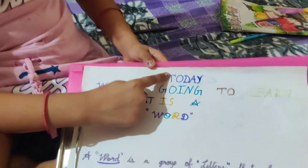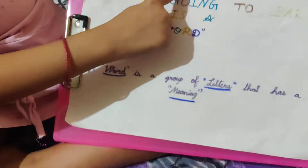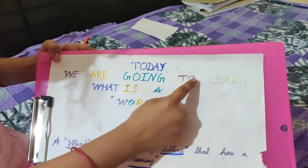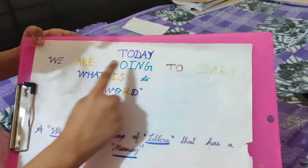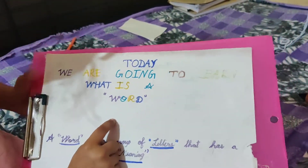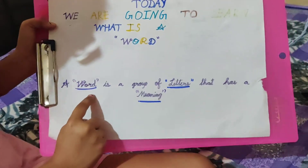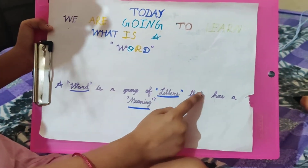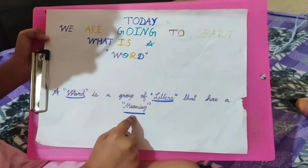Hello friends, my name is Aishmita. Today we are going to learn what is a word. A word is a group of letters that has a meaning.